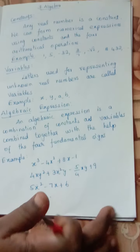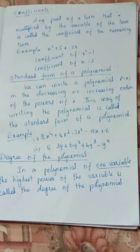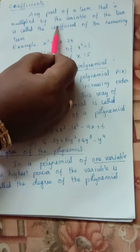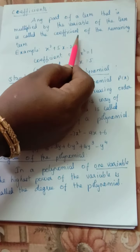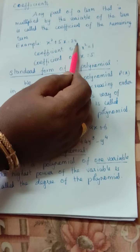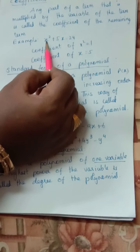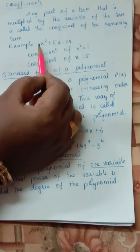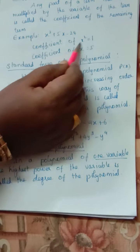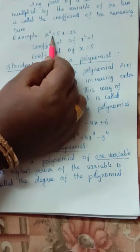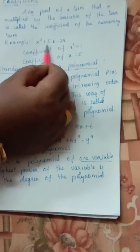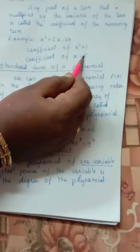All these are examples of algebraic expressions. Next, coefficients. Any part of a term that is multiplied by the variable of the term is called the coefficient of the remaining term. For example: x² plus 5x minus 24. Coefficient of x² — nothing is in front, so it is 1. Coefficient of x is plus 5 — with the sign we have to write. Suppose if minus 5x is there, we write minus 5.